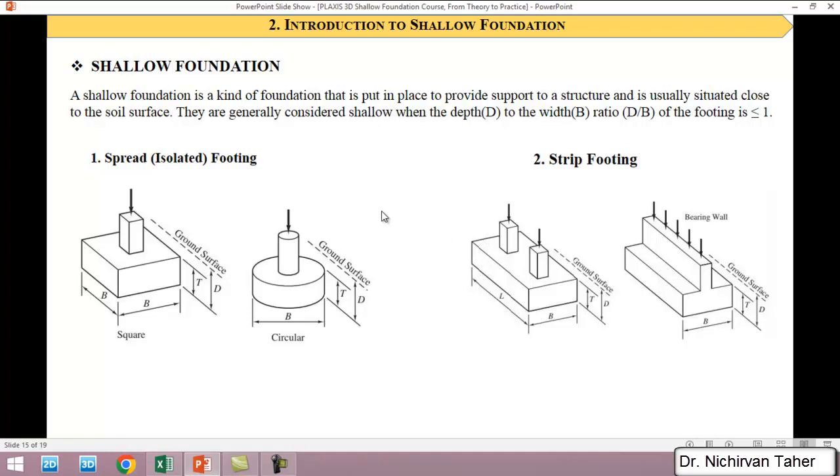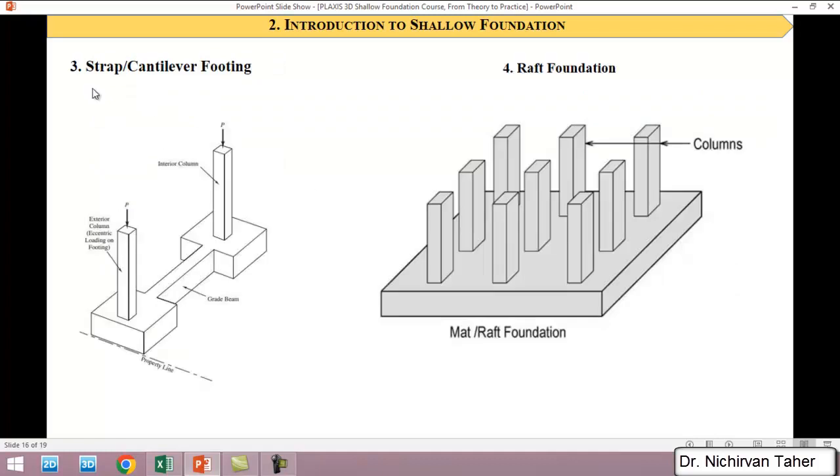Another type of foundation is called a strap footing or cantilever footing. This is generally used when a foundation has to be constructed near a property line, so the column cannot be put in the center of the footing. This results in an eccentric load. To solve this problem, a beam is constructed between the footing near the property line and the other footings to counterbalance the moment.